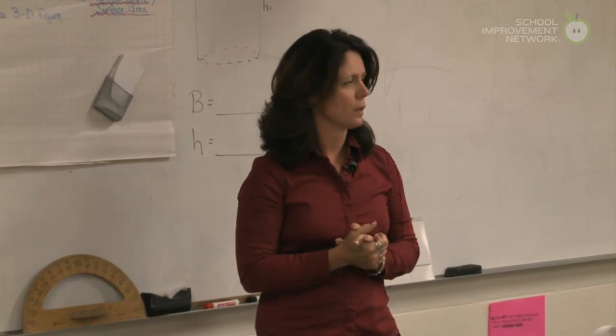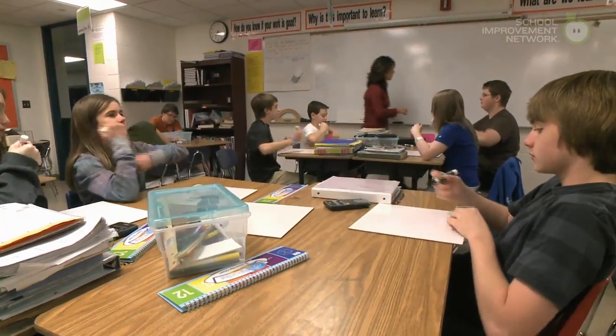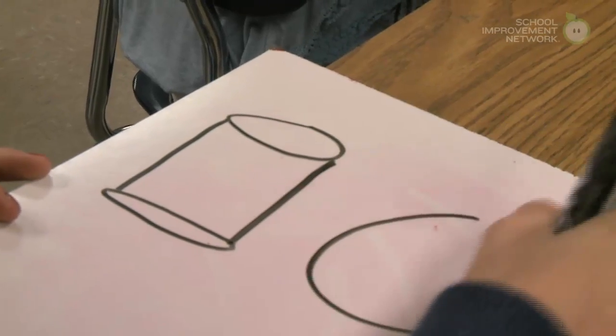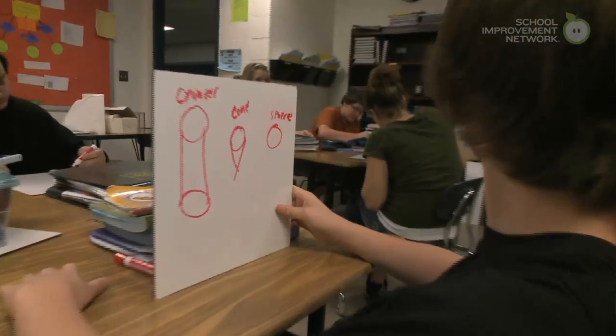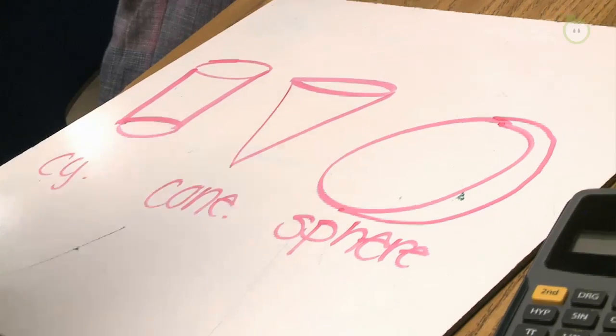First I want you to draw those three images — a cylinder, a cone, and a sphere — and label them on your whiteboards. Our standard is 8G9, where students have to informally prove the formulas for a sphere, a cone, and a cylinder. The goal is that by the end of class, they'll be able to derive the other two formulas if they know the formula for a cylinder.